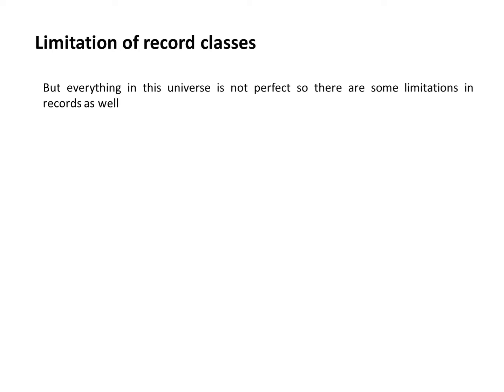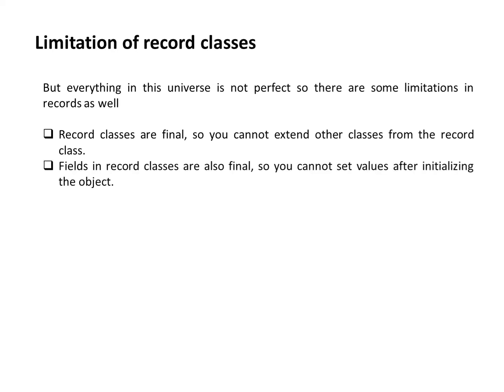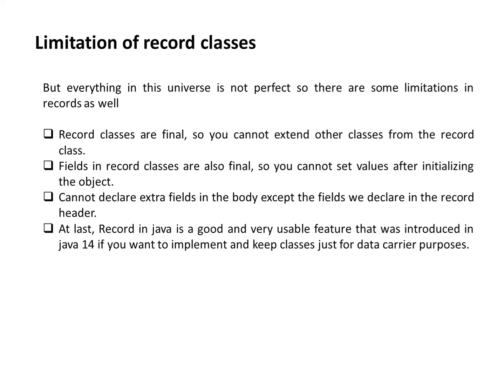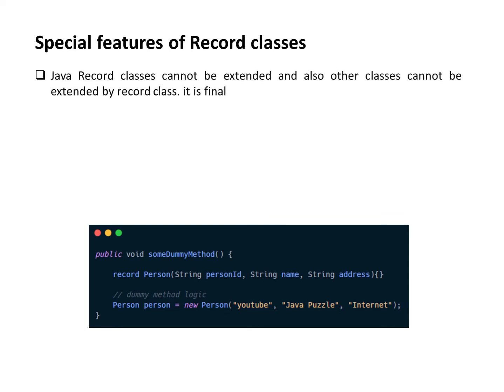Now let's discuss the limitations of the record class. Everything in this universe is not perfect, so there are some limitations in records as well. First, a record class is final, so you cannot extend other classes from the record class. Second, the fields in a record class are also final, so you cannot set a value after initializing the object. Third, you cannot declare extra fields in the body except the fields declared in the record header.